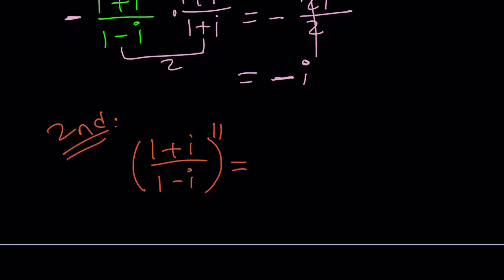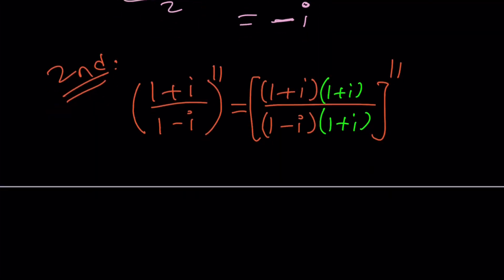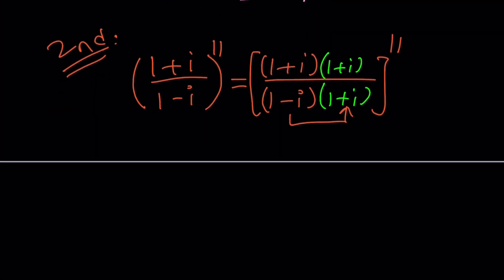So why don't we just multiply 1 plus I and 1 minus I by 1 plus I, the conjugate of the denominator. So it's going to look like this. Multiply by 1 plus I and 1 plus I. And then raise it to the 11th power. But first, do the multiplication. Now, you'll remember this. This gave us 2 and this gives us 2I. Make sense?